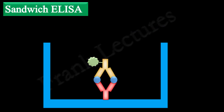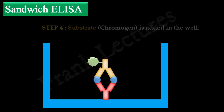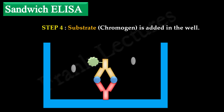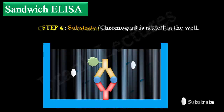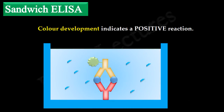In the fourth and final step, the substrate specific for the enzyme linked to the antibody is added. Color development confirms the presence of the antigen in the test sample.